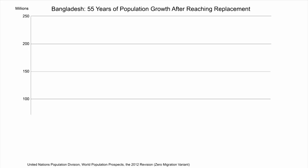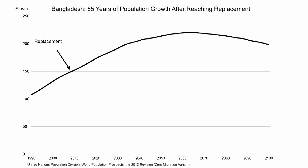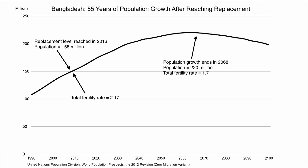Now let's look at two practical examples of how momentum works. The first graph shows UN estimates and projections for Bangladesh. The UN estimates that Bangladesh will reach replacement this very year, with a TFR of 2.17 — not 2.1, because Bangladesh's life expectancy is around 71 at replacement, below that of industrialized countries. Notice how long population continues to grow: 55 years — from 158 million today to about 220 million, not until 2068. That's a large increase after having reached replacement.